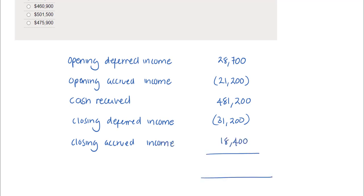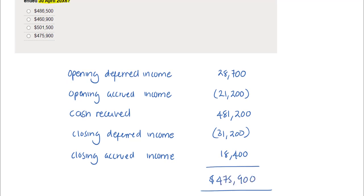If we add down, what we will get is £475,900. This is the rental income that the company must show in its statement of profit or loss for the year ended April X6, which is option D in this question.